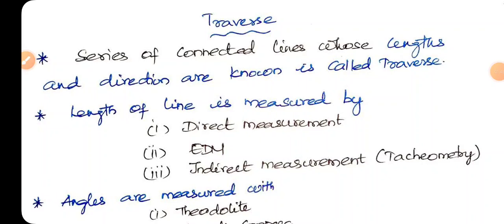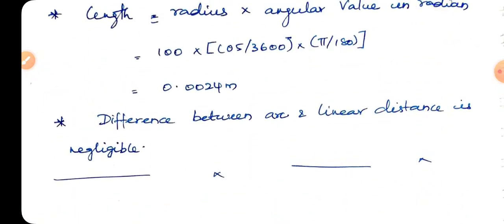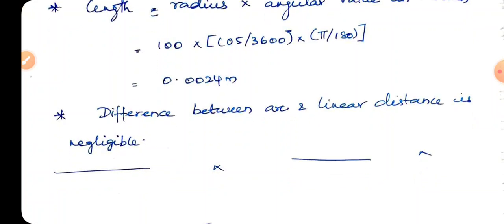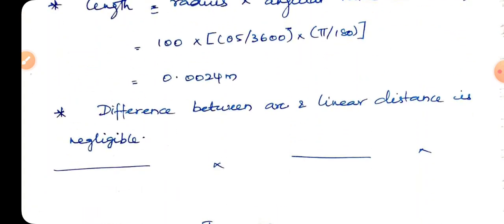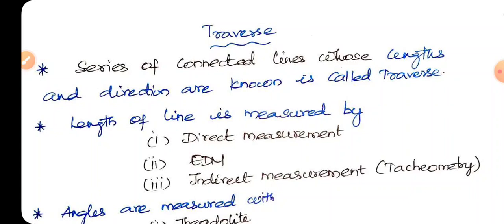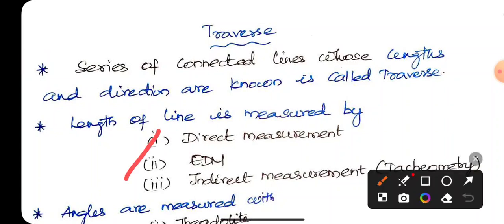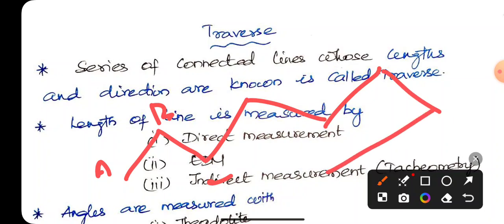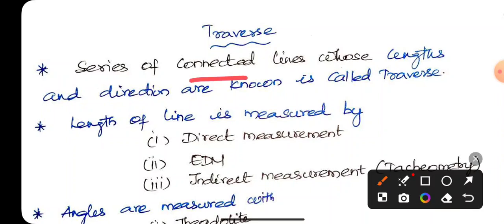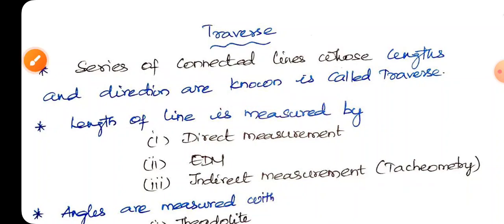If we look at the layout of horizontal angle, length is radius into angular value, pi by 180 radius. Traverse is a series of connected lines whose length and direction are known. That is a series of connected lines whose length and direction are known, that is Traverse.